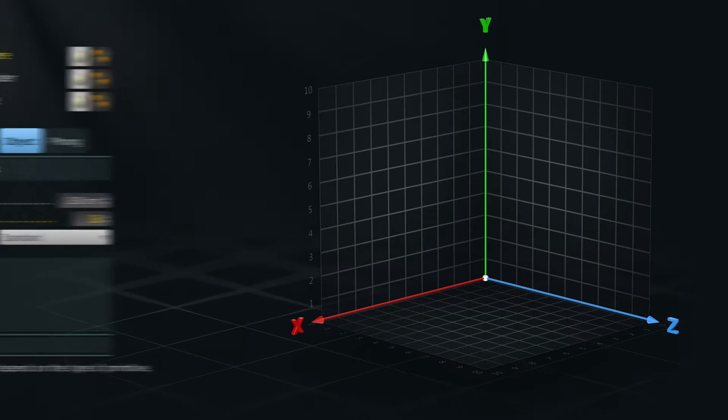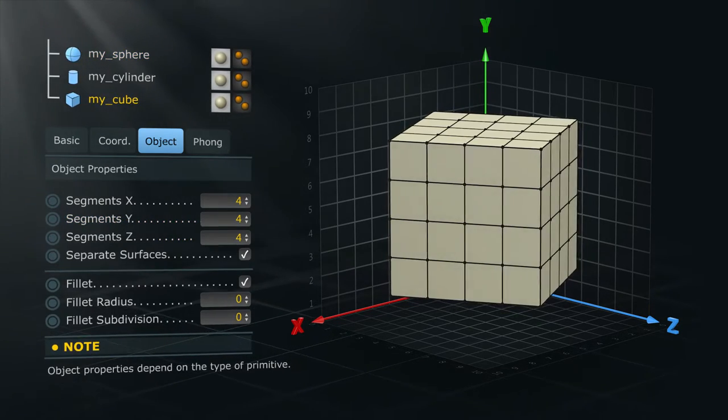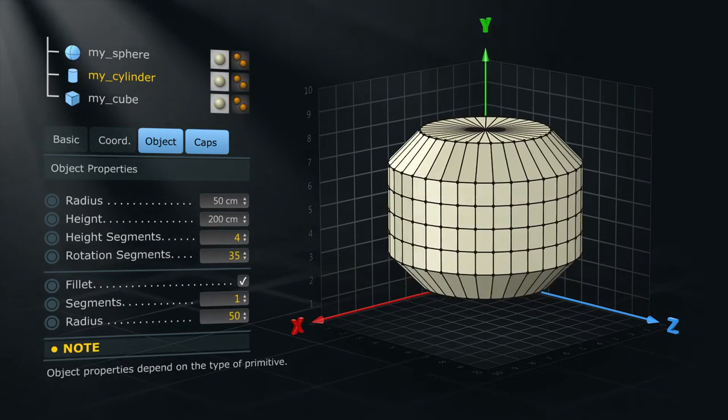Because they are procedural, primitives have a set of attributes that we can easily modify to change their geometry. Some of the more notable ones are the number of segments for both height and rotation and different fillet values.